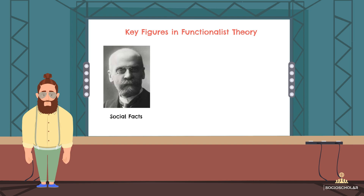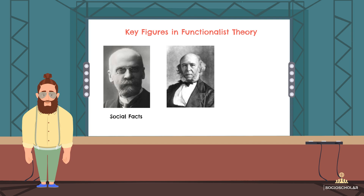Then you've got Herbert Spencer, another of the early trailblazers. Spencer was a big fan of biology, and he brought this into sociology. He saw societies as evolving, just like organisms, from simple forms into complex ones. And just like Durkheim, he thought every part of society had its role to play in maintaining the system.